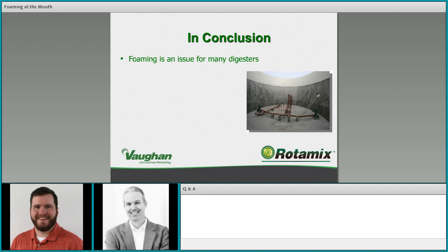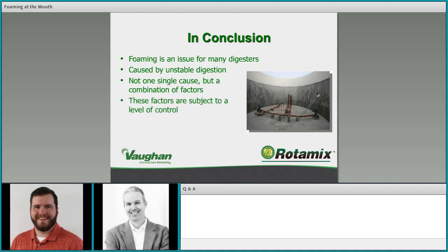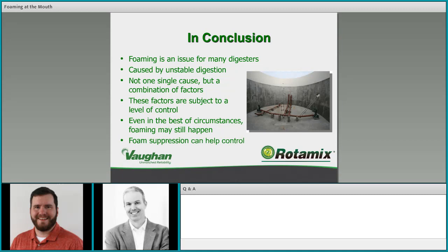In conclusion: foaming is an issue for many digesters — the reality is it affects more than half of digesters in operation. It's caused by unstable digestion but involves a combination of factors, not one single cause, making it hard to pinpoint exactly what's going on. These factors are subject to a level of control through operations and facility management. But even in the best circumstances, foaming may still happen, so it's good to have an insurance policy like the Foam Buster or other technologies. Foam suppression can definitely help control digester foaming even when operations are excellent.